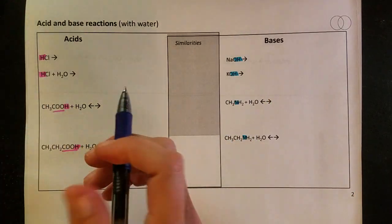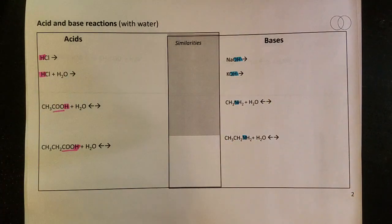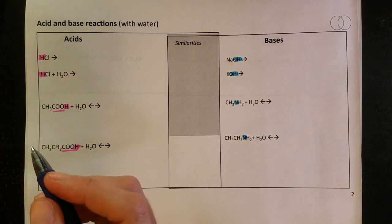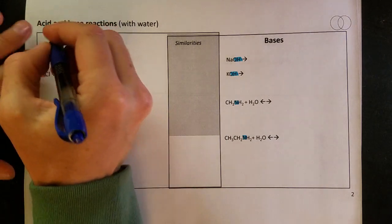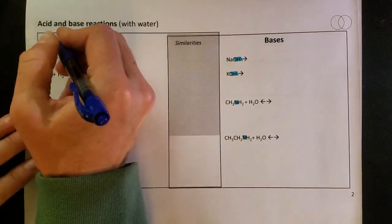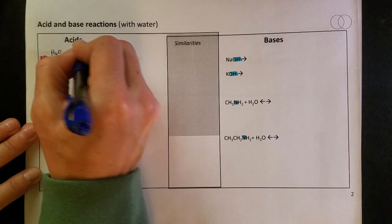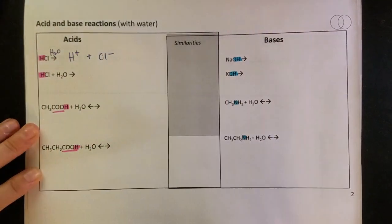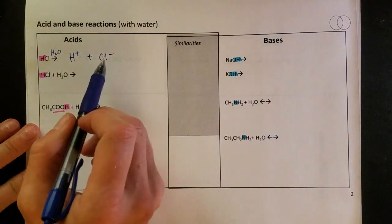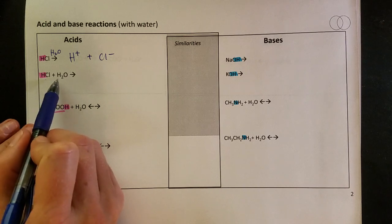Here we're going to look at how these different substances react with water and add a few more vocabulary terms. So for HCl, I could write this reaction with water over the arrow, and I could say that it splits into H plus and Cl minus. We're not generally going to do that; we're going to do reactions that look more like this.